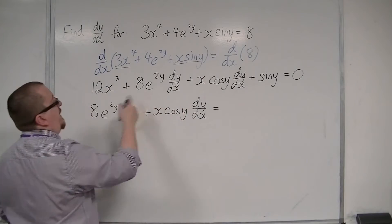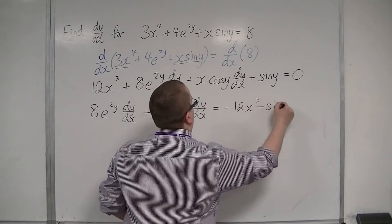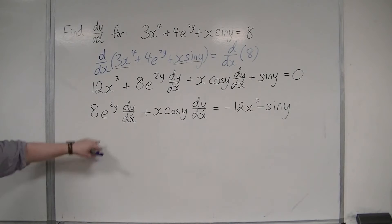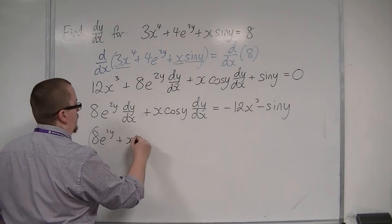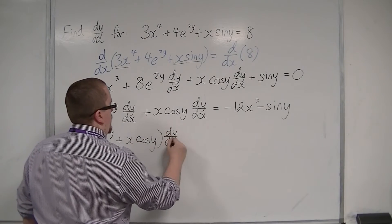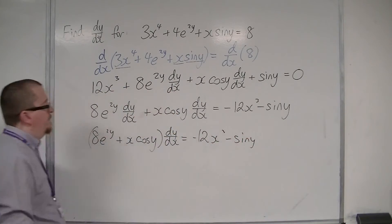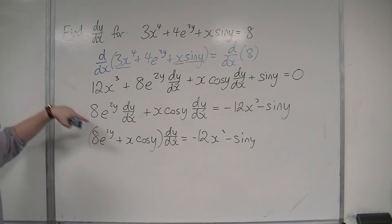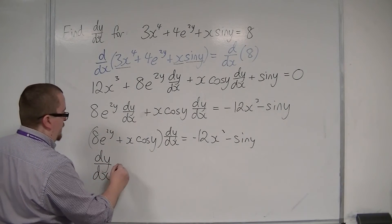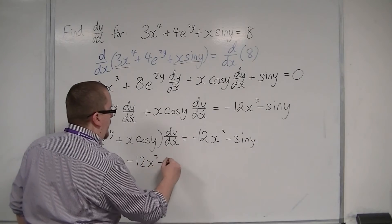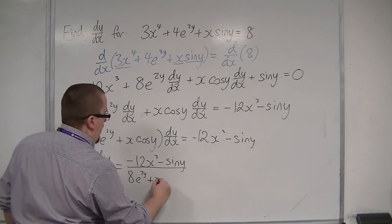So those bits can stay. The 12x cubed and the minus and the sine y can go. I'm then going to factorize the left-hand side. And then I'm going to have to divide both sides by that bracket. So I'm left with dy by dx equals minus 12x cubed minus sine y over 8e to the 2y plus x cos y.